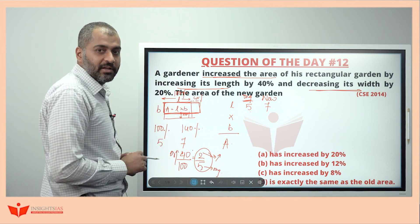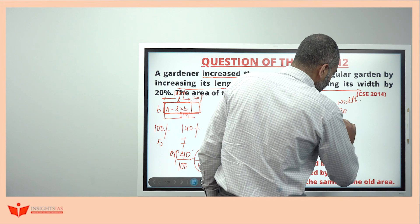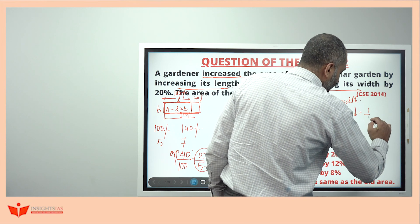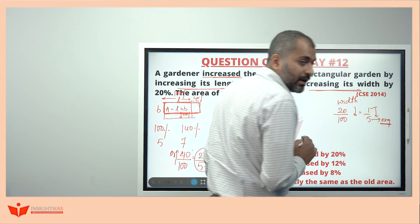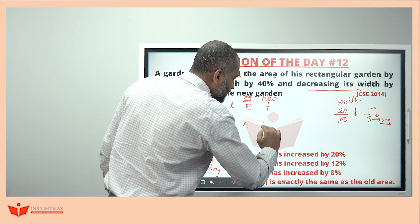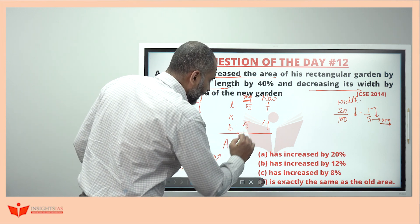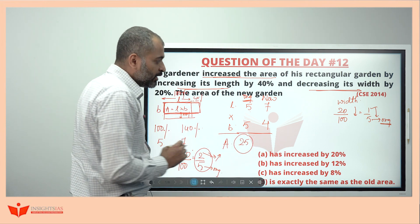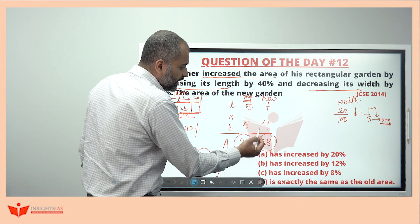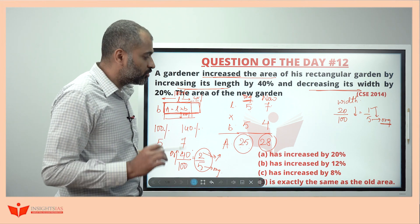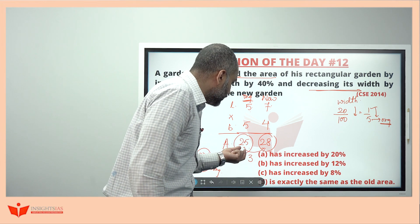Width has been decreased by 20%. 20% is 20 by 100, which is 1 by 5 decrease. So if original width is 5, it decreases by 1 to become 4. Original area is length into breadth: 5 into 5 equals 25. New area is 7 into 4 equals 28. So there is an increase of 3 parts from the original 25.